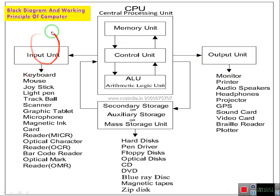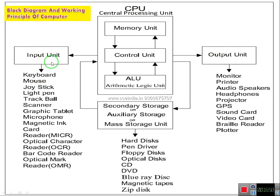If you use the input device — input devices, input unit or input devices. This is the IPO questions. Black box model is a working principle of computer. This is the input process. This is the output process. You can see this output — this is the output line.